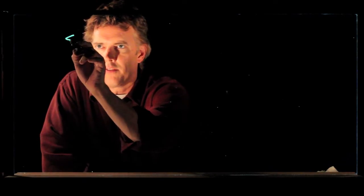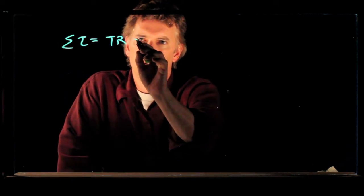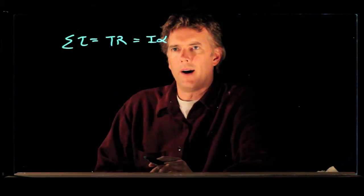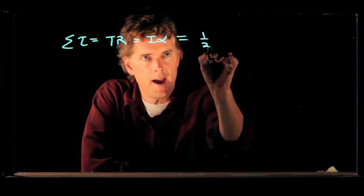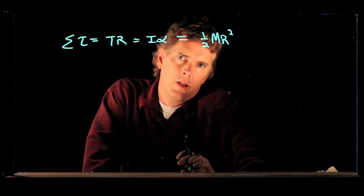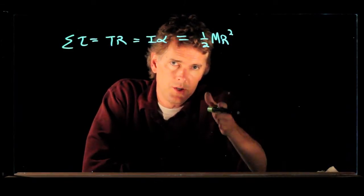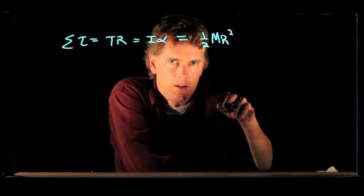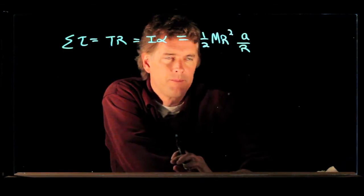So what we have with our pulley now is the sum of the torque is equal to tension times the radius, which is equal to moment of inertia times alpha, the angular acceleration. But for a solid disk, we know exactly what the moment of inertia is: one half capital M, R squared. We also know that the angular acceleration of that disk is related to the acceleration of the block as it falls. And that is A over R.